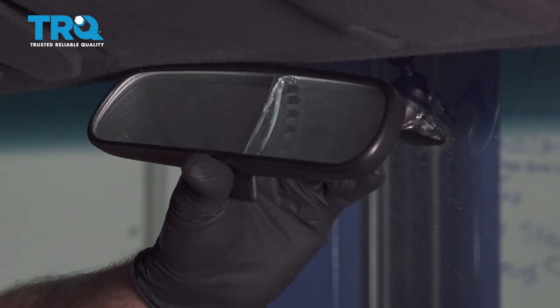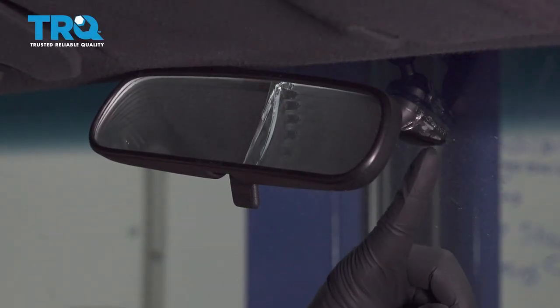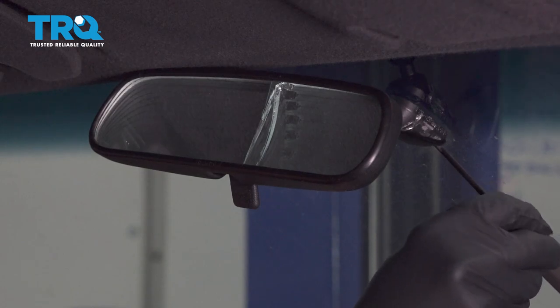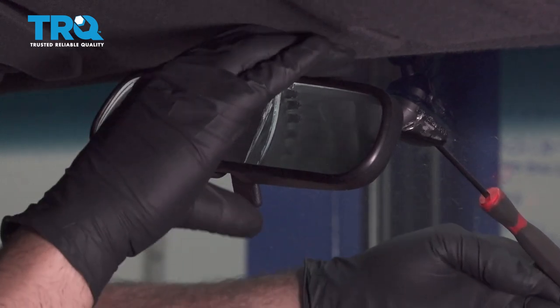Now in order for us to remove our rearview mirror, there's a little hole on the back side. You can use a long pick here if that'll work for you. I'm going to try and put ours in there and wiggle that around.